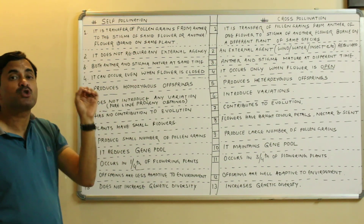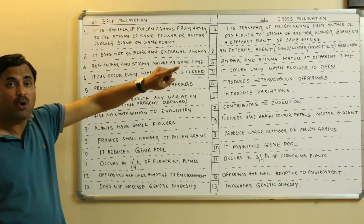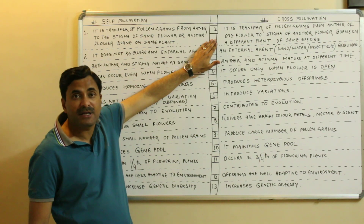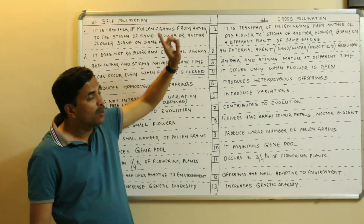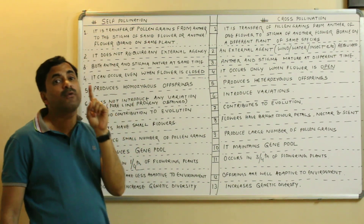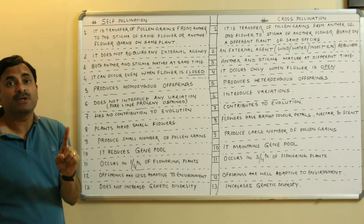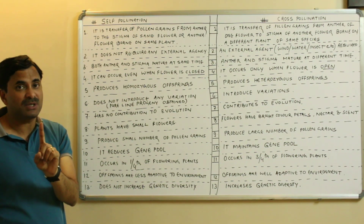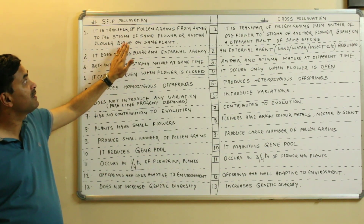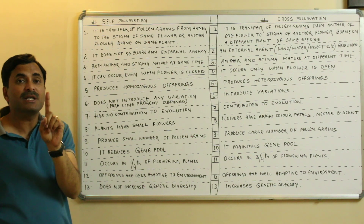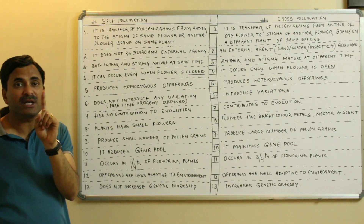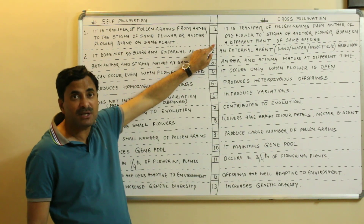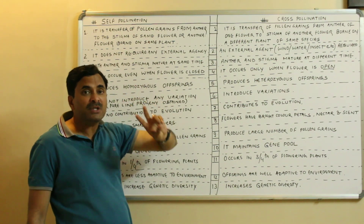Cross-pollination is the transfer of pollen grains from the anther of one flower to the stigma of another flower born on different plants, but of the same species — the two different plants must be of the same species. So in self-pollination we need only one plant; self-pollination can occur in one plant only, while for cross-pollination it is necessary that there must be two plants.